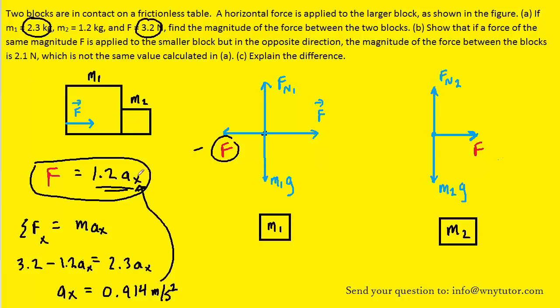It was that action-reaction force. So let's substitute in 0.914 for the acceleration, and that'll give us the force. When you do that, you should get 1.1 Newtons for the force that's acting between mass 1 and mass 2, so part A is solved.